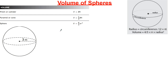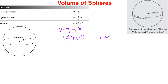We'll solve using substitution. Starting with four-thirds pi r cubed as our formula, I'll plug in r = 3. So we have four-thirds times pi times three cubed. Three cubed is three times three times three — three times three is nine, and nine times three equals 27.